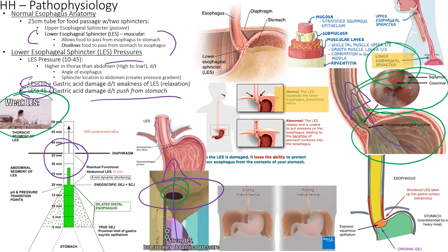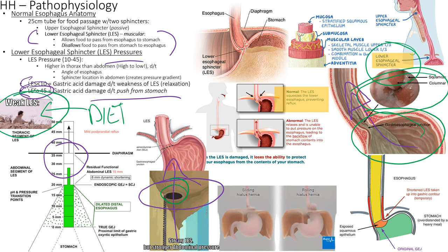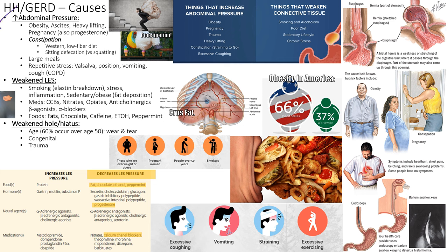Causes of hiatal hernia include increased intra-abdominal pressure, a weak LES, or a weak hiatal opening. The hiatus weakens with age — 60% of those over age 50 have a weak hiatal opening, just due to wear and tear. It can also be congenital, such as in Ehlers-Danlos syndrome with weak connective tissue. Trauma to the diaphragm is another cause, though less common.